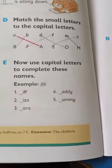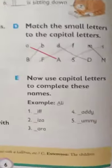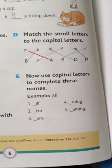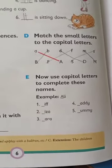Exercise E. Now use capital letters to complete these names. Yahaan pe aapne names complete karna hai, but first letter should be capital. Yahaan pe aapne ye names joh hai, they are taken from the story.